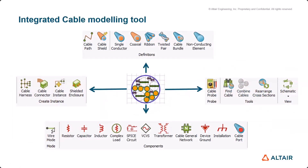The integrated cable modeling tool has various features that help users easily design and analyze different types of cables. Users can define paths to route the cable; the routing points can be defined manually or imported using a KBL file, an ASCII file, or a Nastran file. There are also a series of supported cable types, including single conductor, coaxial cable, ribbon, twisted pair, non-conducting elements, and cable bundles.